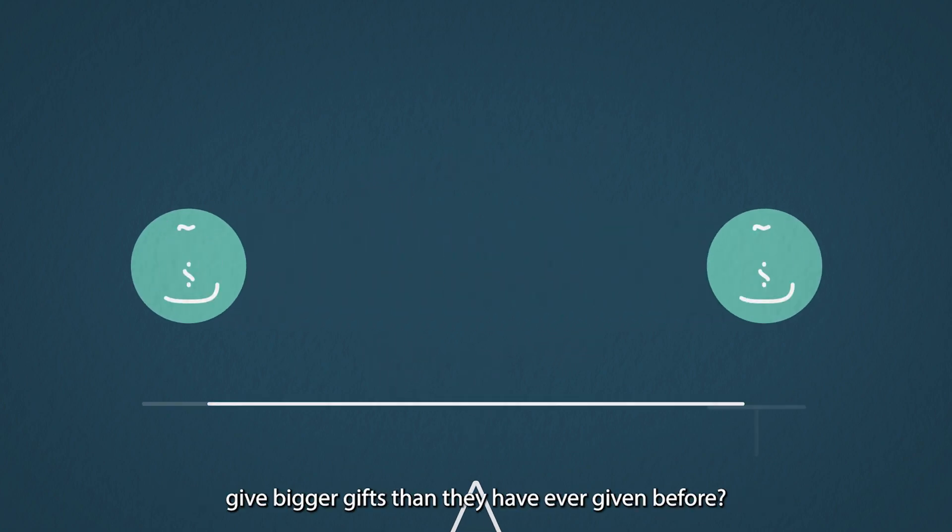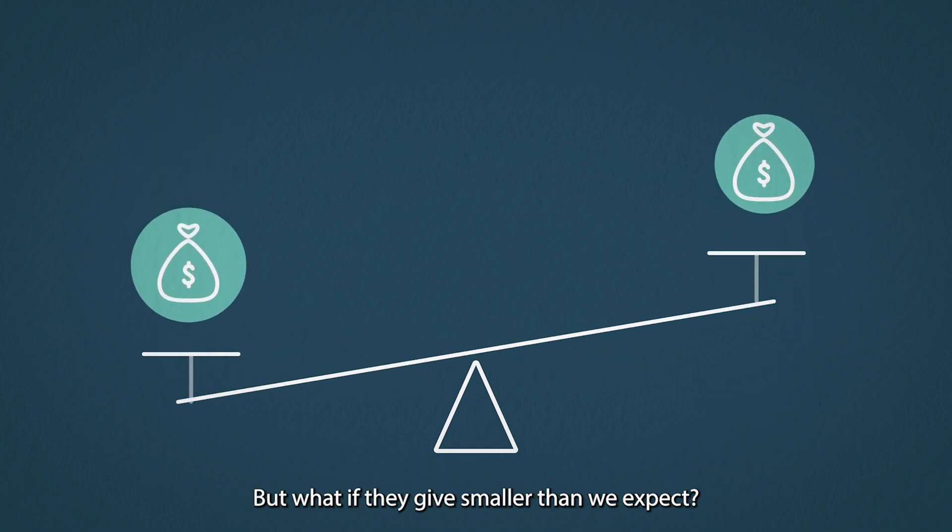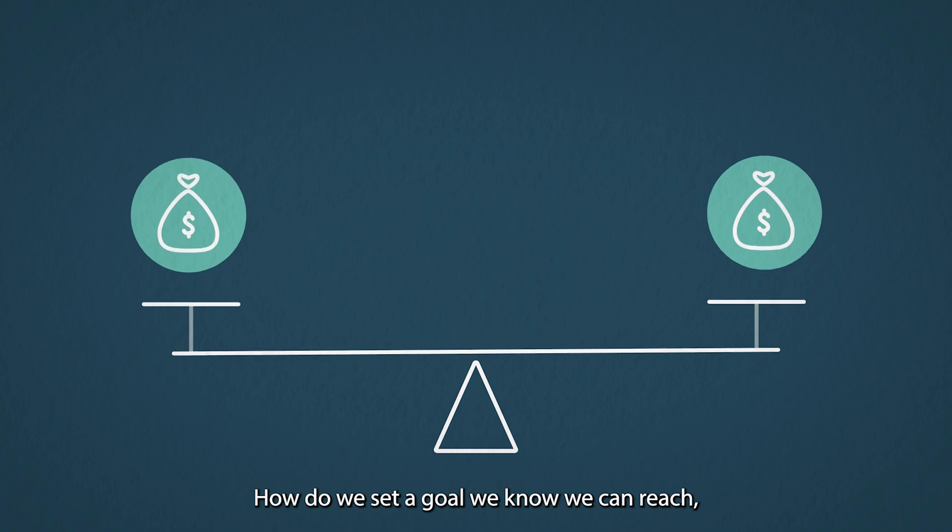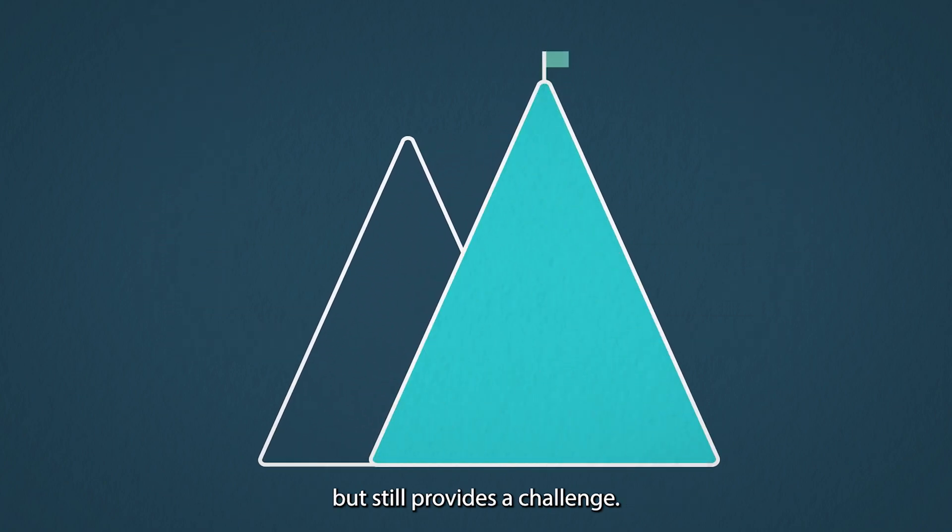What if some of the majority of donors give bigger gifts than they have ever given before? But what if they give smaller gifts than we expect? How do we set a goal we know we can reach but still provides a challenge?